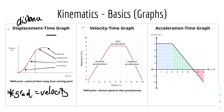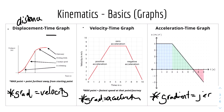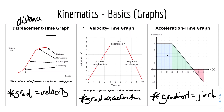For the velocity-time graph, the gradient is equal to the acceleration. A positive gradient means positive acceleration, a zero gradient means zero acceleration, and a negative gradient means negative acceleration. The maximum point is the fastest speed during that journey. For the acceleration-time graph, the gradient is called jerk — the derivative of acceleration — but it's not in our spec. The area under the acceleration-time graph gives velocity, and the area under the velocity-time graph gives displacement.